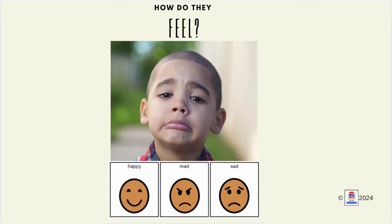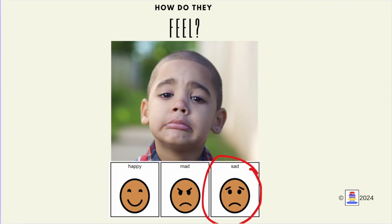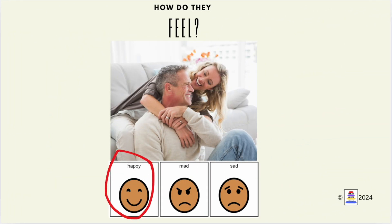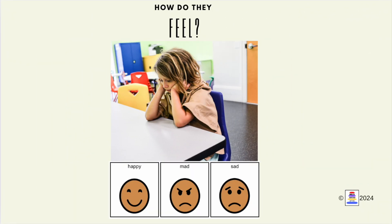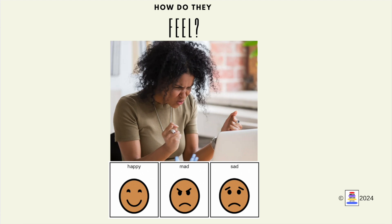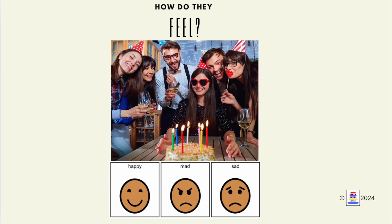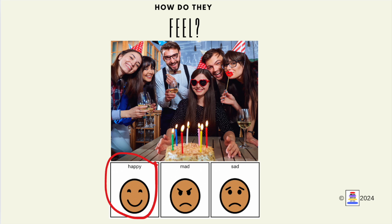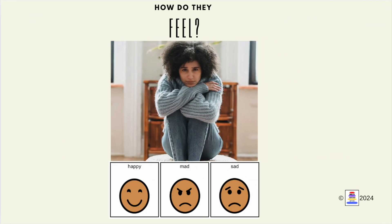How does this person feel? They feel sad. How does this person feel? They feel happy. How does this person feel? They feel sad. How does this person feel? They feel mad. How does this person feel? They feel happy. How does this person feel? They feel sad.